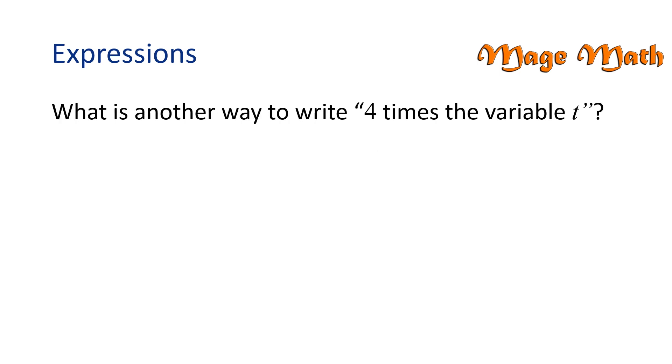What is another way to write 4 times the variable t? The key term is times, which means to multiply. We can write 4 times t, or in a more simplified version, we can just write 4t. When a constant is next to a variable, the implied operation is multiplication.